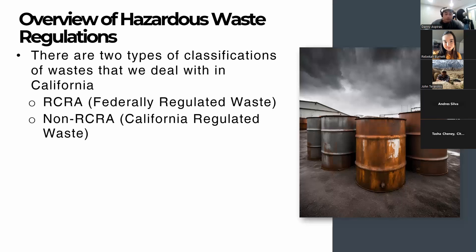In California, there are two types of regulated waste: RCRA, which is federally regulated, and non-RCRA, which is California regulated. For example, RCRA waste in California could be barium shavings, while non-RCRA includes oily sludge or waste oil. If you have specific questions about what is RCRA versus non-RCRA waste, one of the best resources is contacting a hazardous waste disposal facility — it's their job to profile the waste and figure out what codes apply.